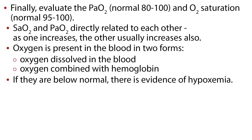It is also important to know the oxygenation status of a patient. The partial pressure of arterial oxygen, referred to as PaO2, is the amount of oxygen dissolved in the blood, and is normally 80 to 100 mmHg. The PaO2 does not play a role in acid-base regulation. However, a low PaO2 indicates an alteration in respiratory function or breathing air with a low level of oxygen.